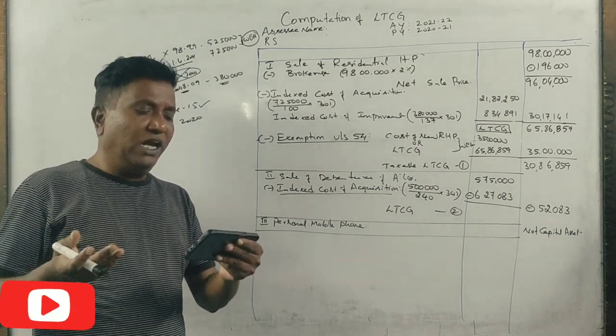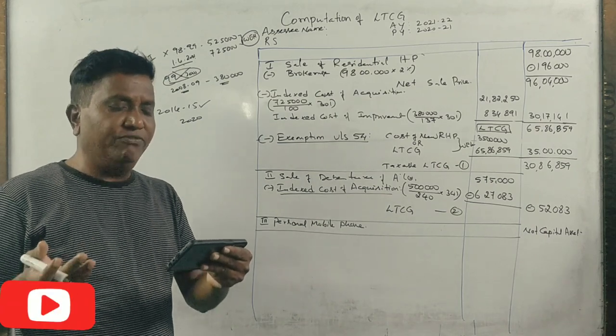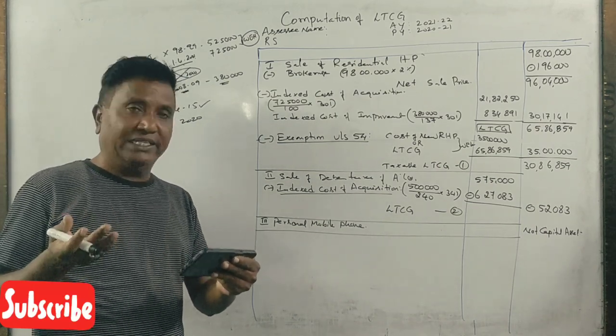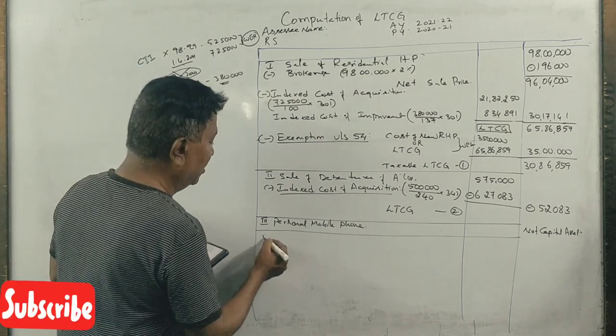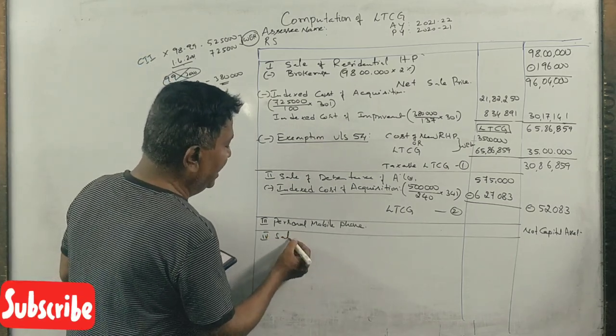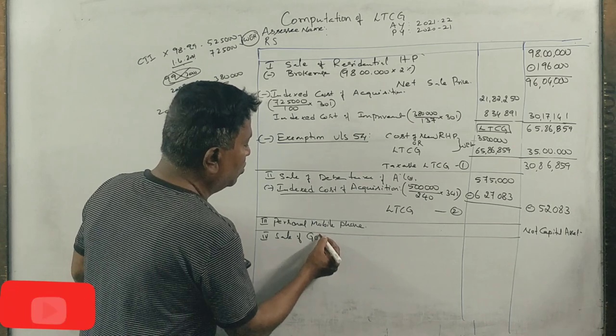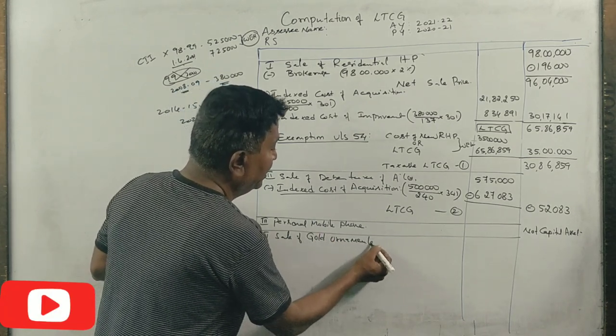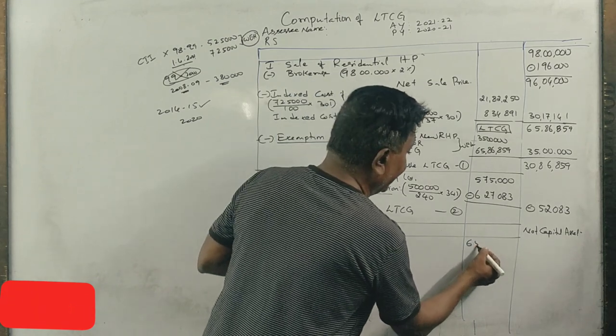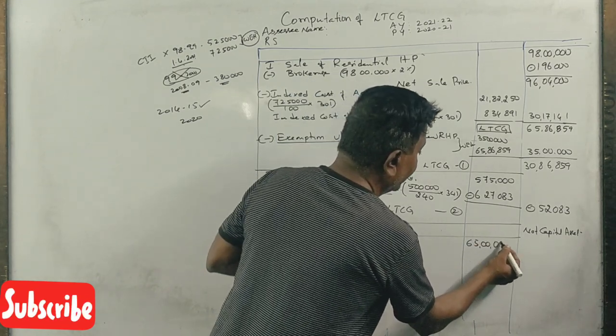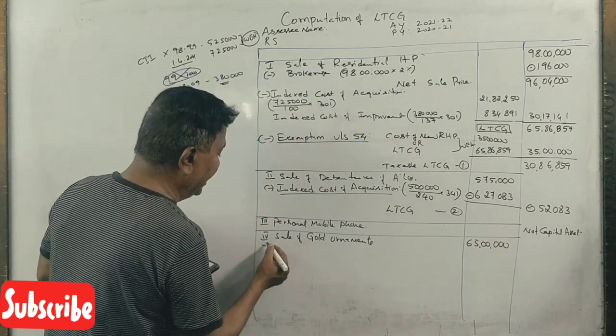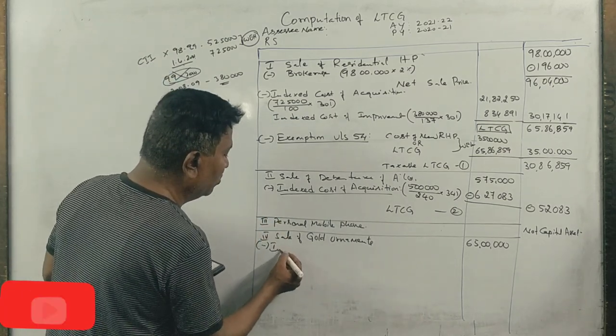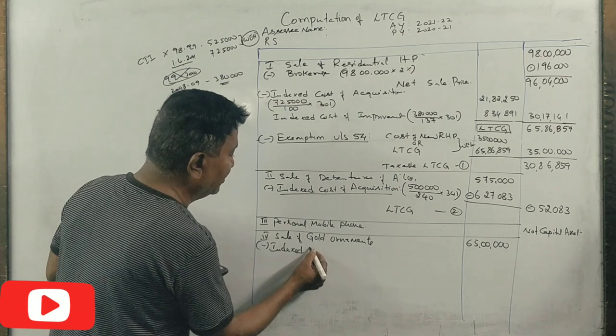Fourth point: Gold ornaments sold on 30th of September 2021 for Rs 65,00,000. Commission and direct expenses to be deducted. Now we calculate indexed cost of acquisition.